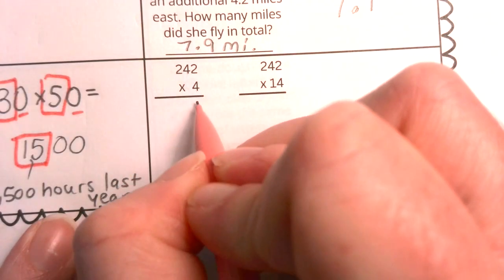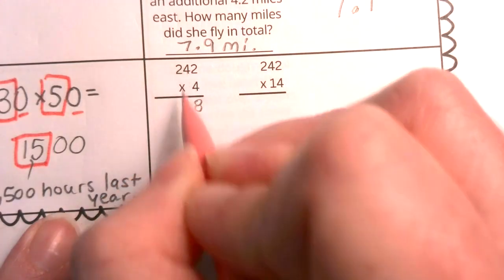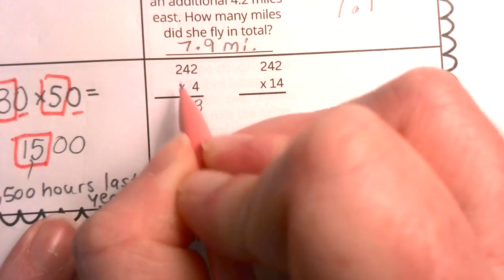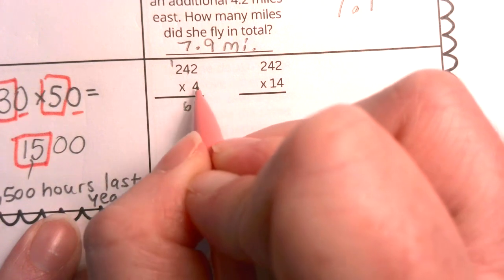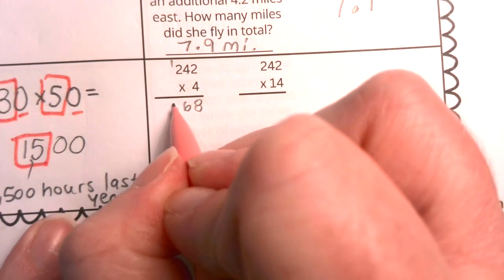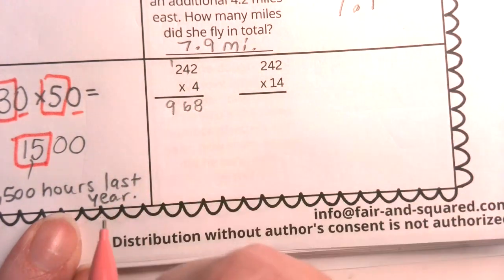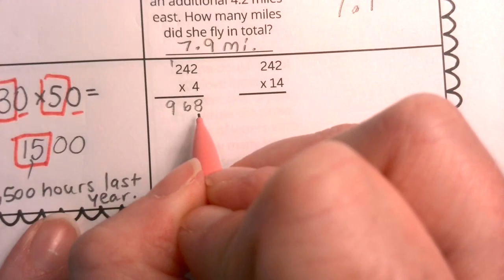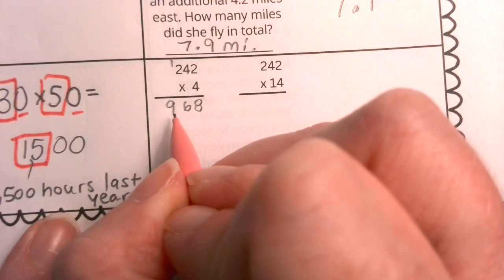So we have four times two is eight. Four times four is sixteen. Here is my six carried by one. Four times two is eight plus one is nine. So my answer here is 9,600, or excuse me, my answer here is 968.